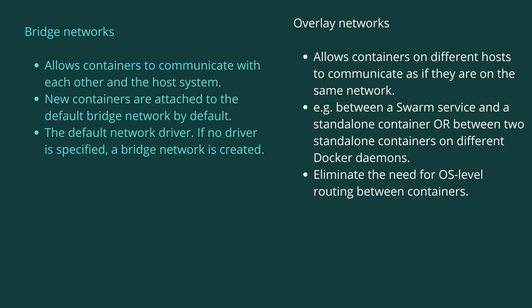Bridge network allows containers to communicate with each other and the host system. Any new container is attached to the default bridge network by default. If no driver is specified, a bridge network is created. On the other hand, overlay network allows containers on different hosts to communicate as if they are on the same network — for example, between a swarm service and a standalone container, or between two standalone containers on different Docker daemons.